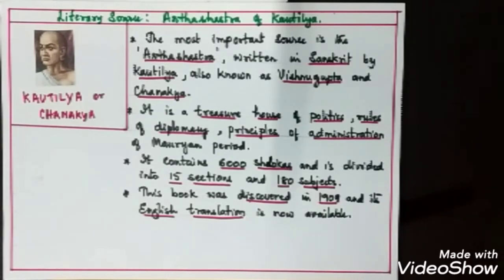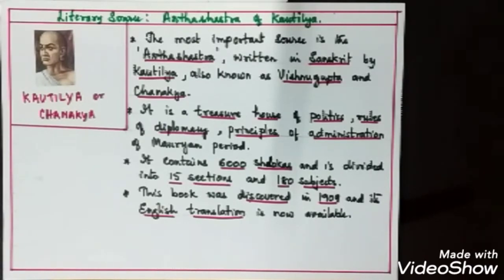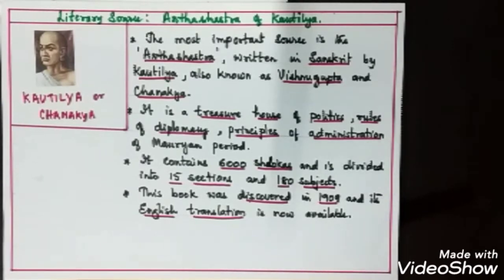The Arthashastra gives detailed descriptions about the administration, wars, and principles, rules and regulations followed by the Mauryan emperors, especially Chandragupta Maurya. It contains 6,000 shlokas and the book is divided into 15 sections and 180 subjects. An English translation is available, and it was discovered in 1909.